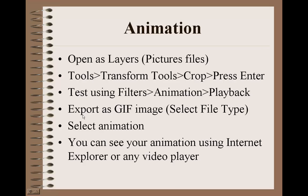Then I exported this as a GIF image. You have to go to Select File Type, which is in the lower left corner, and select GIF images. By selecting that, another window will open up and you'll have to select Animation. By selecting Animation, it will sequence those pictures together into an animation.